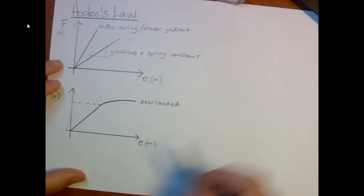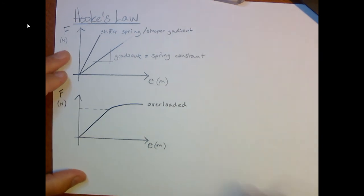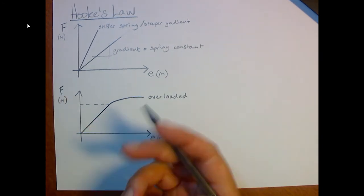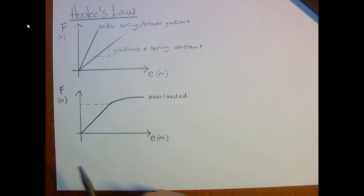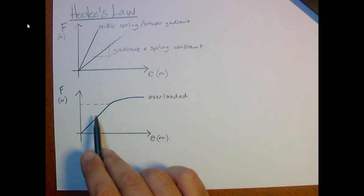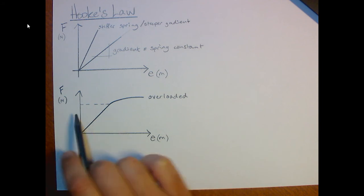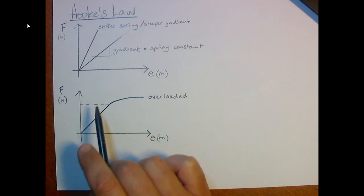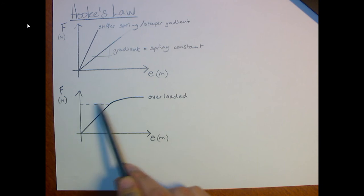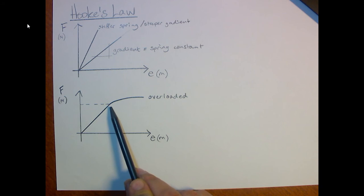So we can work this out from a graph. And therefore, if we've tested a spring, if we've got 100 identical springs with the same spring constant and the same length, and they're made of the same material, then we will be able to predict when this happens. And we can make sure that whatever we're using that spring for, it doesn't get overloaded.